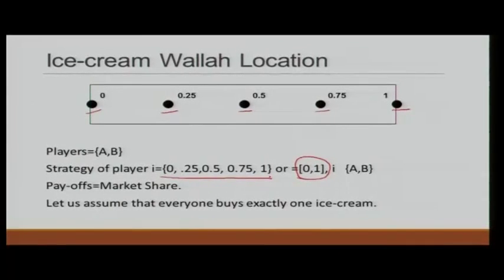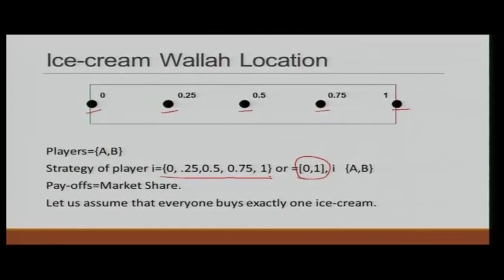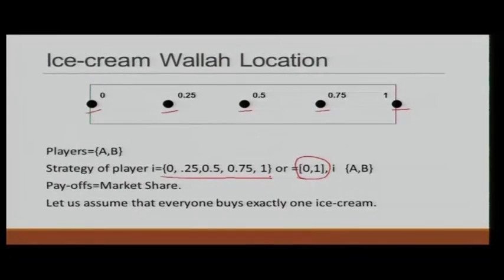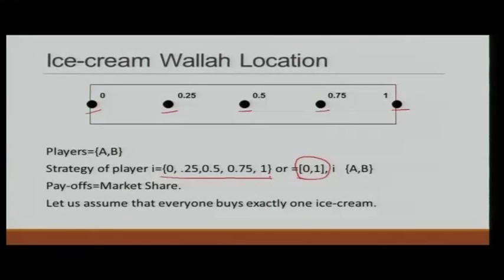This can be modeled as a game. We have two players — both ice cream vendors. Their strategies are to park their cart at 0, 0.25, 0.5, 0.75, or 1. Both vendors have the same strategy set. The payoff can be captured by market share, since everyone wants one ice cream and the price is fixed. The only thing they can do is capture a larger market share. Consumers are not active players because they do not have strategic considerations.